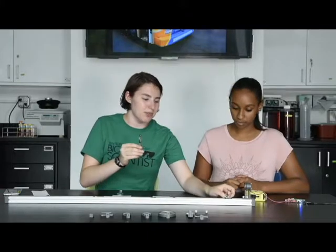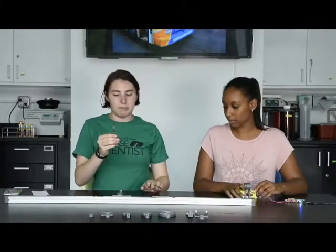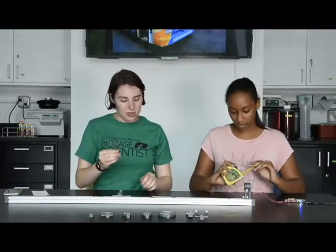So you put the collector lens on first, making sure that the curved side is facing towards your light, so we can bend the light as much as possible. You want to put it on at about the focal length. So this is going to be around seven centimeters. We measured it before.